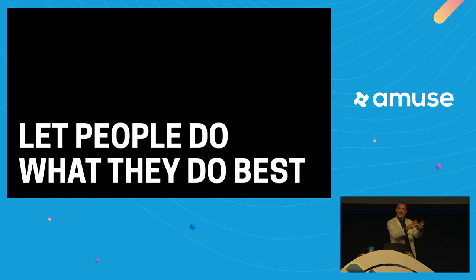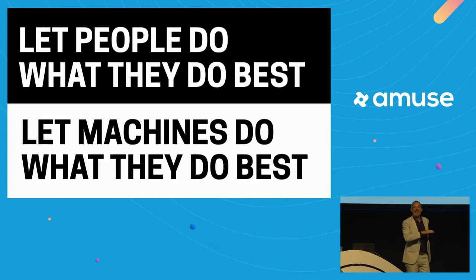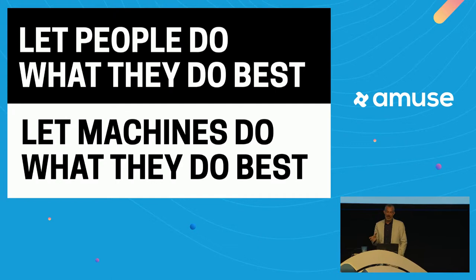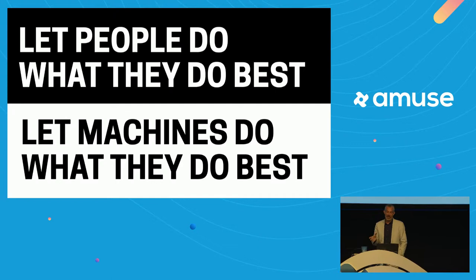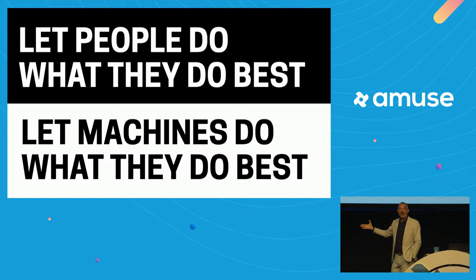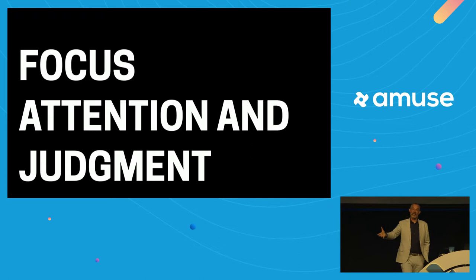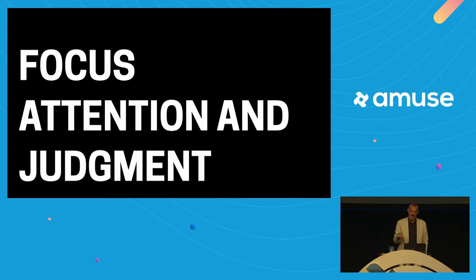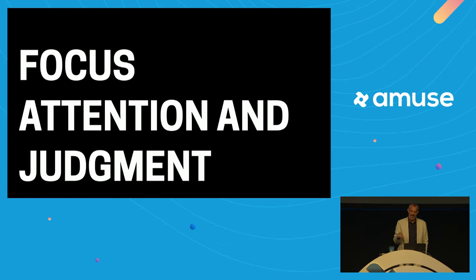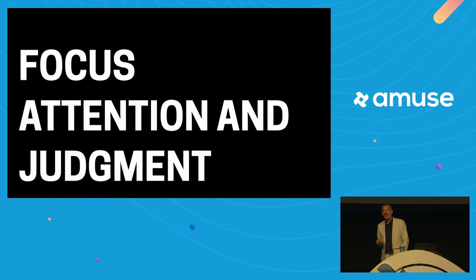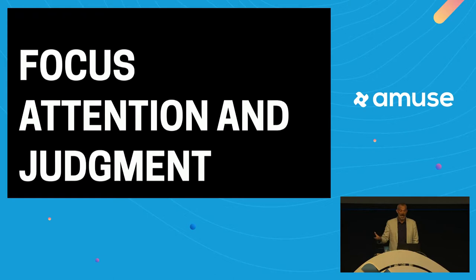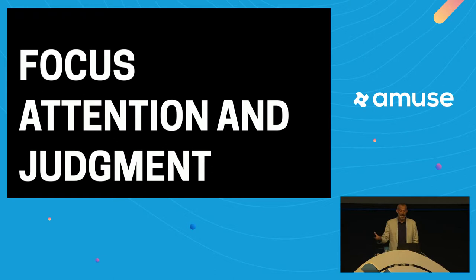The opportunity is: how can we let people do what they do best, and optimize for that by letting machines do what they do best — because they are never the same thing? How can we have a useful partnership? What we're talking about is amplifying our humanity. The goal for any algorithmic interface should be about focusing attention and judgment, not replacing it. Our industry has spent a lot of time making machines more capable; I think we can do more to put a premium on augmenting human capability.